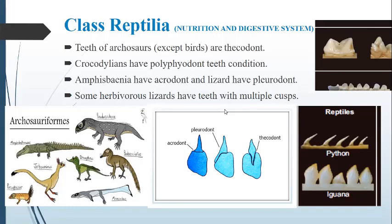One more important thing is herbivorous lizards. Herbivores are organisms which feed only on plants. The herbivorous lizards have teeth with multiple cusps. Cusps are the pointed ends of the teeth. Some herbivorous lizards have these multi-cusped teeth in their jaws.